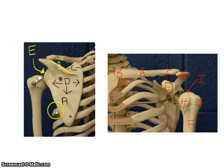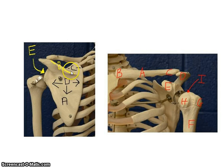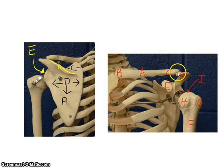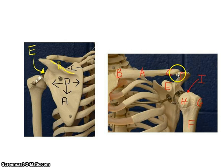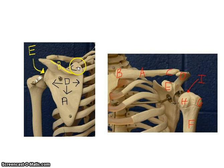Posteriorly we have the scapula. Here we have the spine of the scapula — you can feel it if you put your fingers back there, and you'll have a lot of muscle attachments. At the end of the spine is the acromion process of the scapula, which articulates with the acromial end of the clavicle. Below the spine is the infraspinous fossa and above the spine is the supraspinous fossa — remember superior and inferior to help you with that.